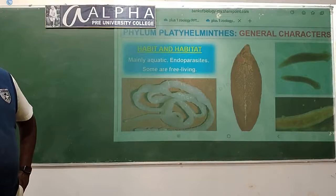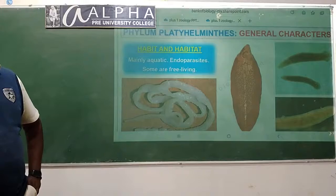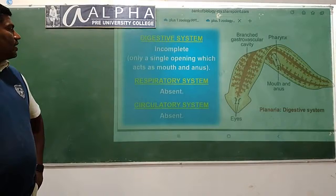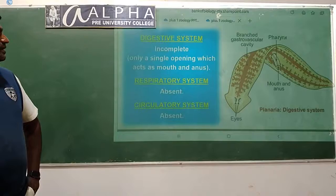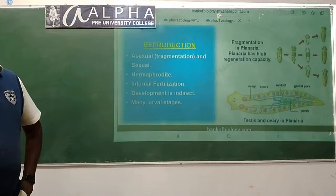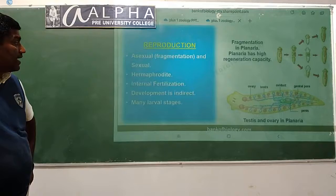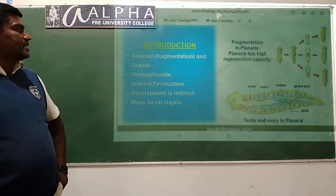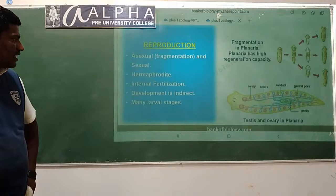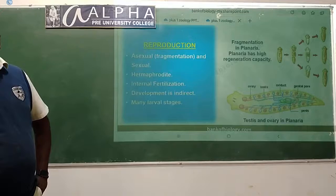Habitat: mainly aquatic, endoparasites, and some are free living. Digestive system is incomplete with only a single opening which acts as both mouth and anus. Both the respiratory and circulatory systems are completely absent. They reproduce asexually by fragmentation and sexually by fusion of gametes. They are hermaphroditic, meaning both male and female sex organs are present in the same individual. Internal fertilization, development is indirect.